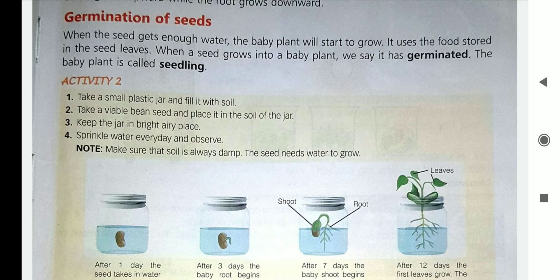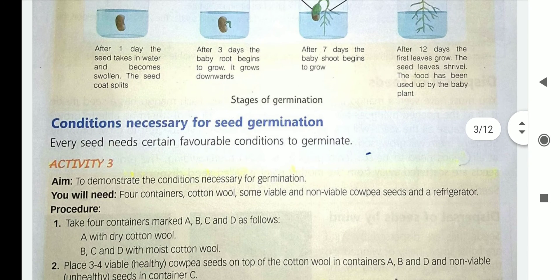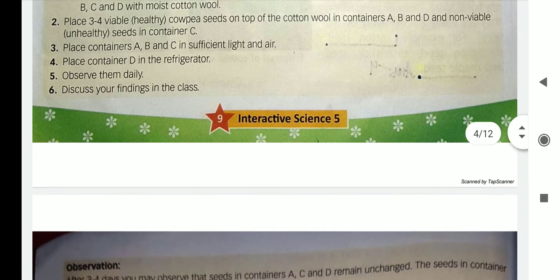Hello children. We have already discussed in the previous class about the structure of seed. Today I am going to tell you about germination of seeds. The development of a seed into a seedling is called germination. As you know, a seed contains an embryo, which grows into a baby plant or seedling.